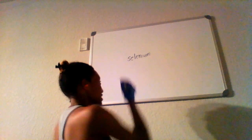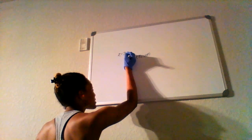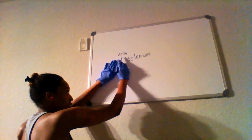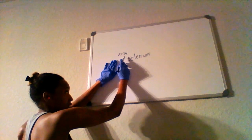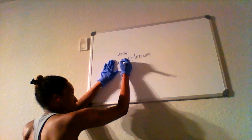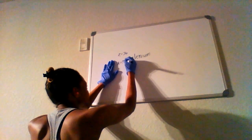And the atomic number Z equals 34. Now remember, the atomic number is the amount of protons contained in the nucleus. And the mass number A for selenium is approximately 78.96.